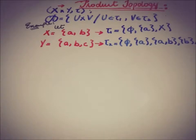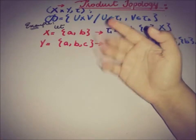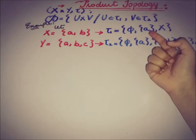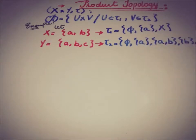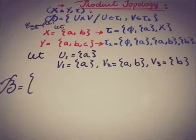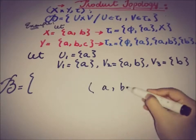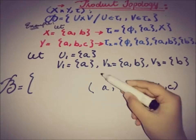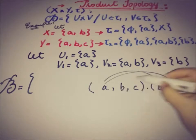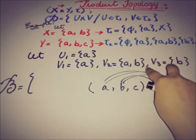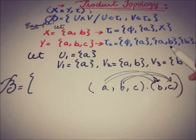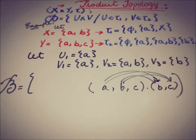We only need to figure out elements other than the empty set and the full space. Let's name the element from tau1 as u1, and the elements from tau2 as v1, v2, v3, because in the basis we defined elements U cross V where U must be from tau1 and V from tau2. When multiplying, we take u1 with v1, v2, v3. We don't separately multiply the empty set and X because the empty set and X cross Y are always included as required elements of the base.